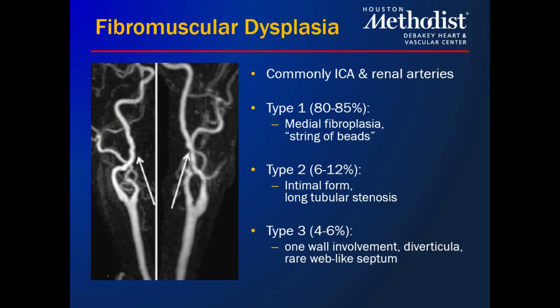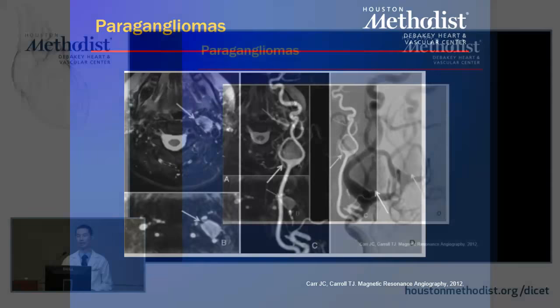Fibromuscular dysplasia involves dysregulation of the medial lining in most cases, though intimal and eccentric wall involvement have also been described — types 1, 2, and 3. This usually involves the internal carotid artery and can also affect the renal arteries, leading to stenotic and cerebrovascular events. Paragangliomas also show up on occasion and are fairly easy to pick out on both ultrasound and other imaging modalities.